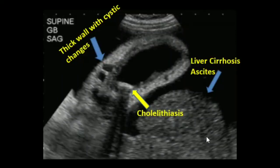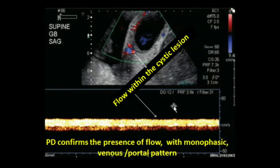This image belongs to a male patient of 50 years age suffering from liver cirrhosis. In this image we can appreciate an irregular outlined liver, ascites, thick-walled gallbladder with multiple cystic lesions in the wall, and gallstones are also appreciable. By applying color Doppler, the cystic lesions in the wall of the gallbladder were appreciated.